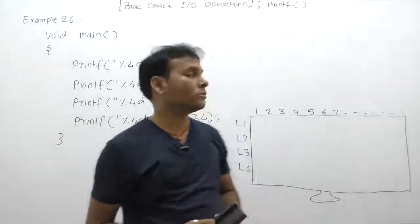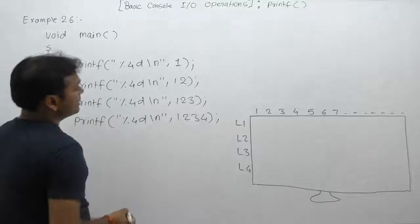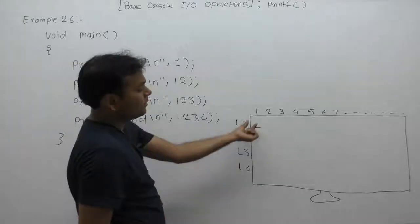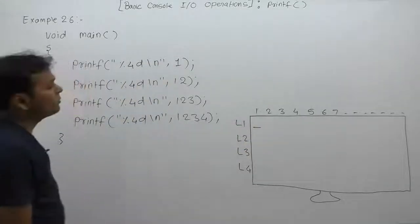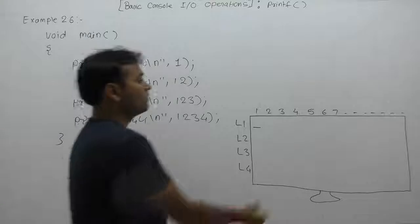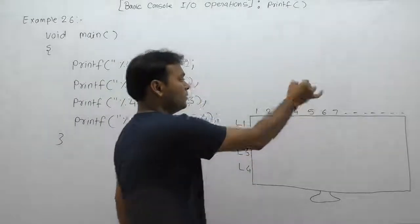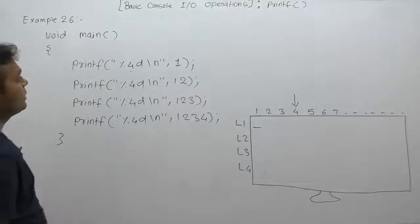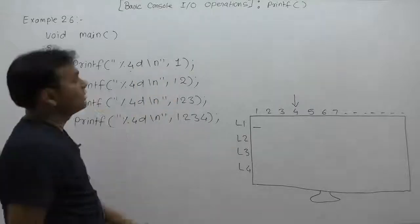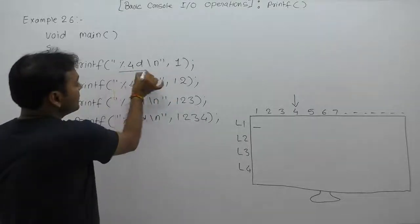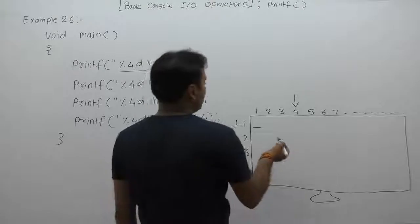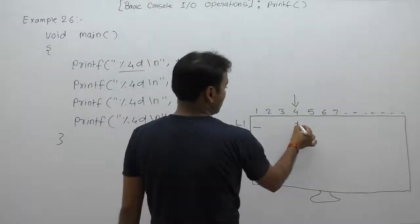First, consider the printf function. Suppose the current cursor position is at the first position of the first line. We are supplying a width of 4 each time. When displaying a single-digit number like 1, the number contains only one digit, so according to the width specifier, the number is displayed right-justified — value 1 is placed at the rightmost position.